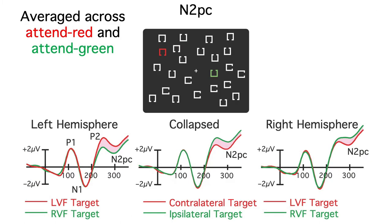Then we look at the data contralateral versus ipsilateral to the attended side, collapsed across attend-red and attend-green blocks. This allows us to be sure that the difference in voltage between contra and ipsilateral electrodes reflects the side being attended, not a difference in the physical stimuli between the two sides.